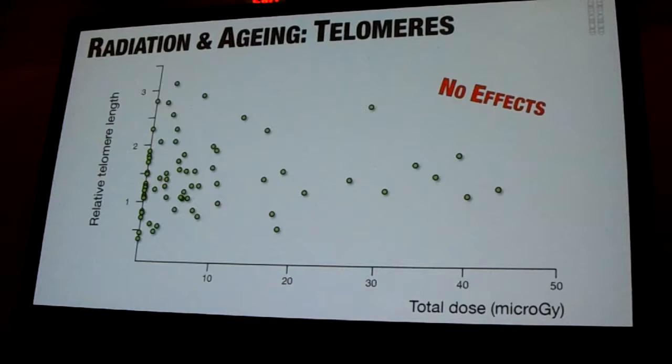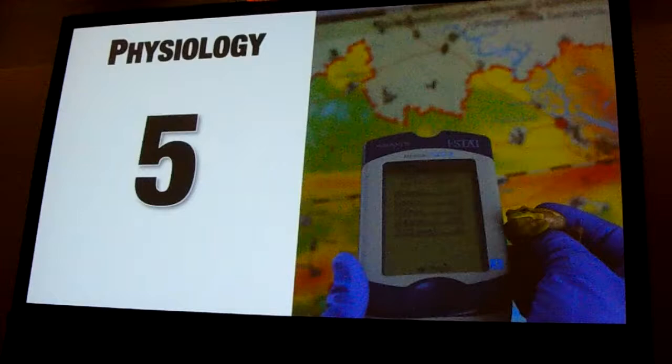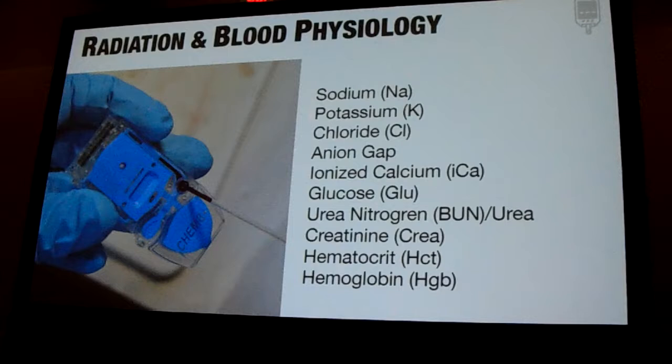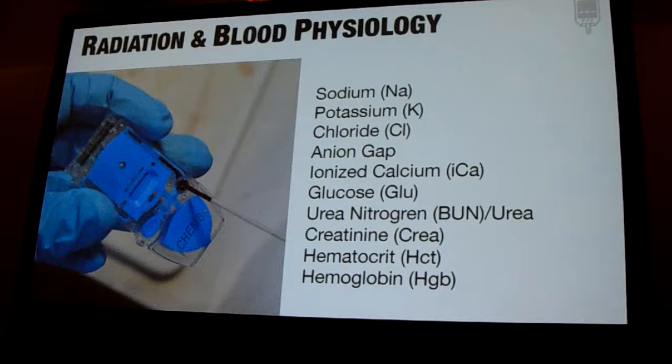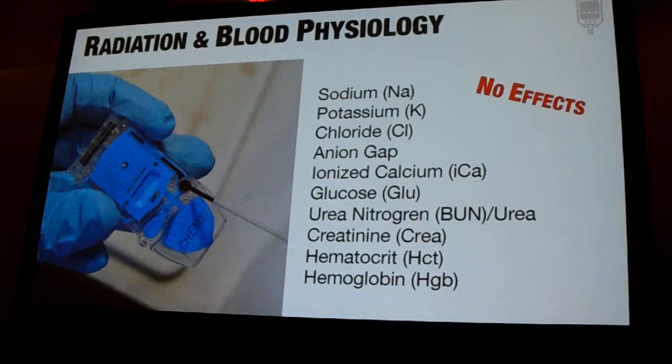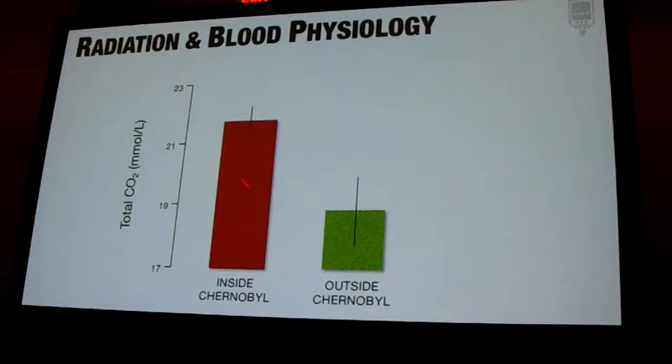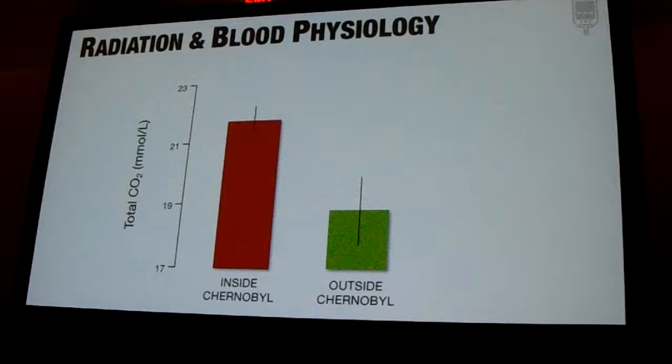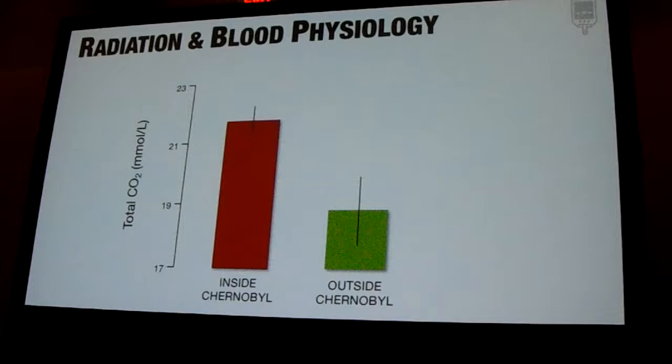Another factor we have been looking at is different physiological traits, and in particular blood physiology — looking at many different traits that could be linked to kidney damage, liver damage, or general physiological imbalances. For all those traits, there were no effects between frogs living in high contamination areas, medium contamination areas, or completely uncontaminated areas. Only for one of the traits — CO2, which is higher inside the exclusion zone — were there significant differences. This could be a hint of higher stress levels in frogs living inside the exclusion zone, but it is only marginally significant and it's the only one out of the 13 traits we have been examining.